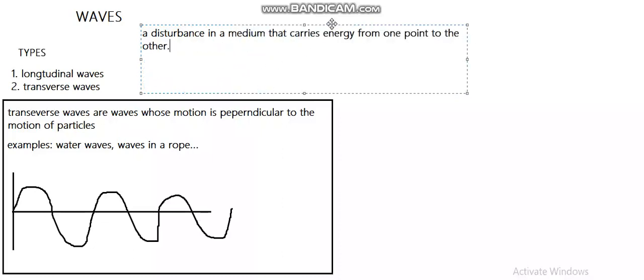So it's a disturbance in the medium that carries energy from one point to the other. That's the definition of the wave. Now there are two types of waves. We have two types of waves: longitudinal waves and transverse waves.